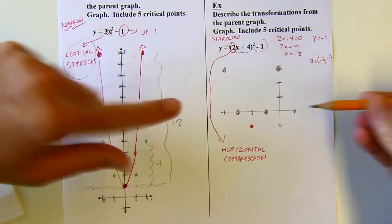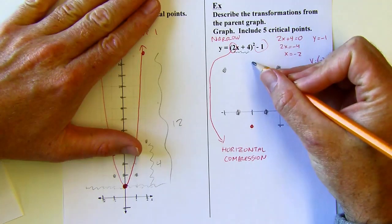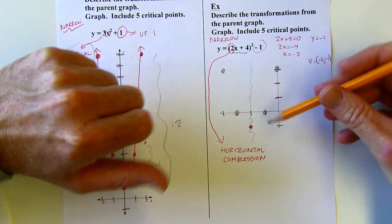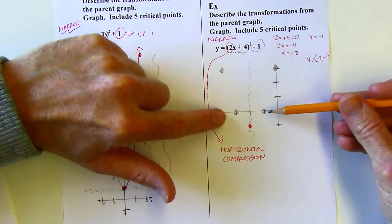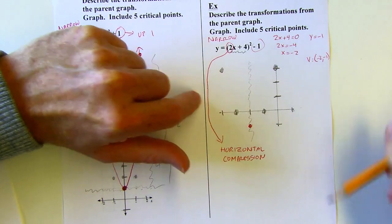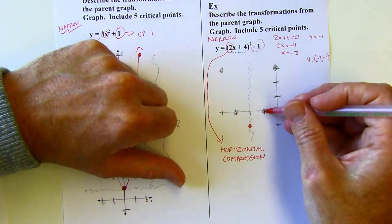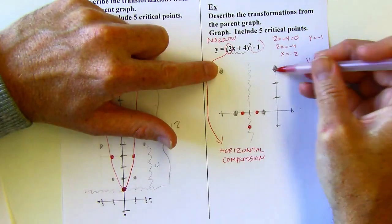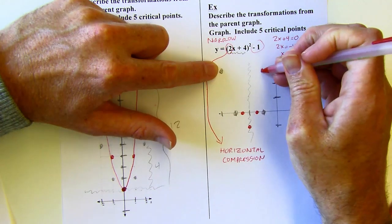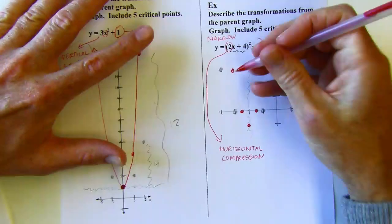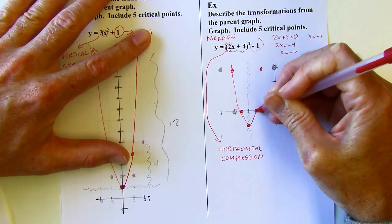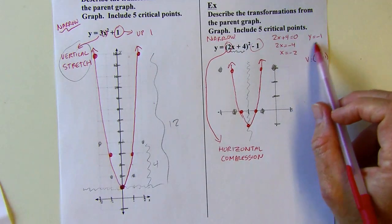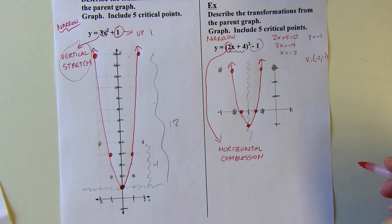For the horizontal compression: the middle of the parabola is the vertex, and I'm squeezing points in towards it. It's twice as narrow, so each point moves to half the distance from the center. The first ghost points are one unit from center — I want half a unit. The outer ghost points are two units away — I want one unit. I draw my parabola and I have a narrower parabola by way of horizontal compression, shifted left two and down one.